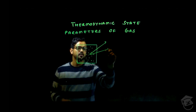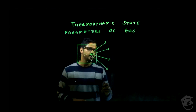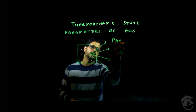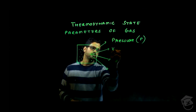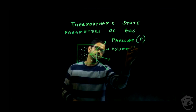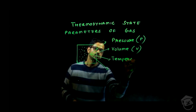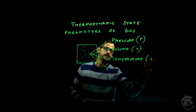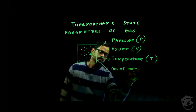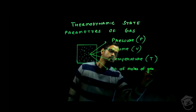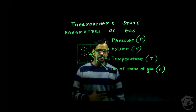Similarly, if we have a gas present in a container, there are four state variables used to give information regarding that gas. Those four state variables are: the pressure of gas, represented by P; the volume of gas, represented by V; the temperature of gas, represented by T; and the number of moles of gas, represented by n.